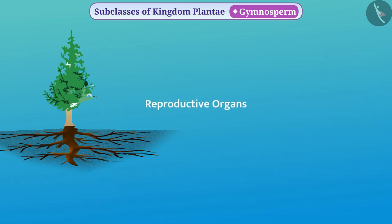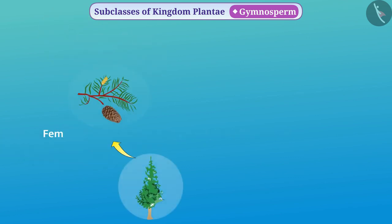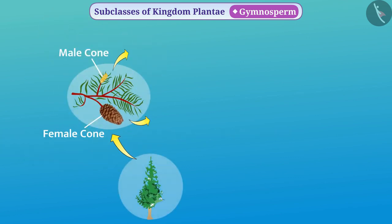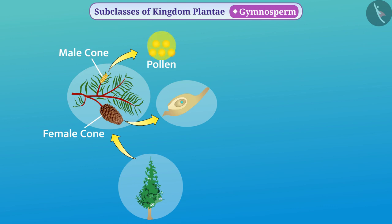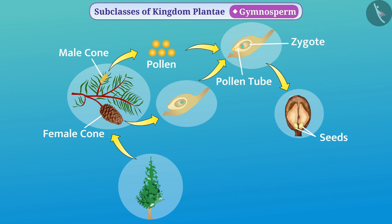The reproductive organs are on different sporophylls of the same tree. The spores are arranged in a spiral on the stem and form dense cones found in upper parts of the plant. Female cones are generally larger than male cones. Pollination is mainly by air. After transfer of the male gamete to the female cone by air, it is brought to the female gamete — the egg — by the pollen tube. The fertilization of male gametes with the female gamete produces a zygote, which grows and develops into a seed. The female cones open at the appropriate time and the seeds get dispersed.